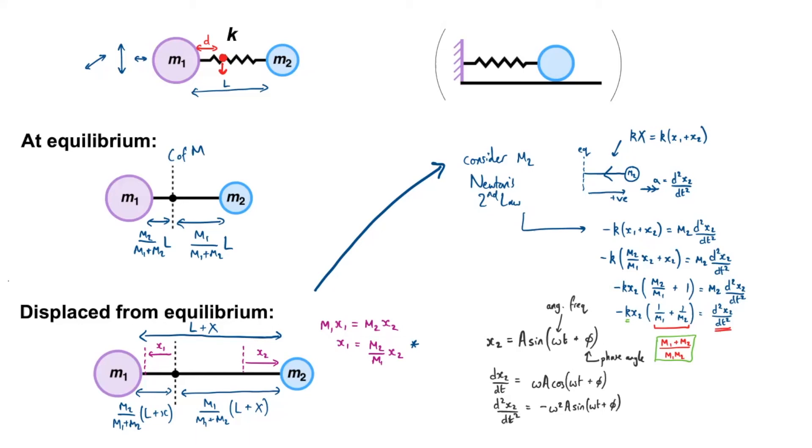And now we can see by inspection that this whole bit here is nothing but x2. So I can rewrite the second one as minus omega squared times by x2. And this is the usual form of an equation for simple harmonic motion.